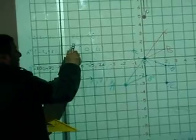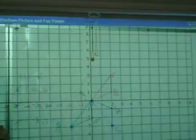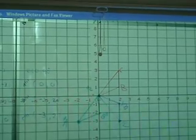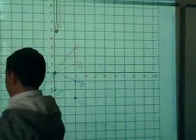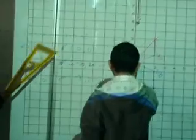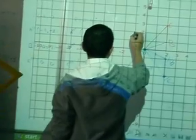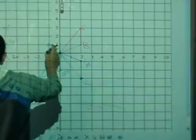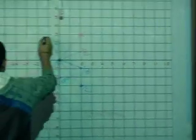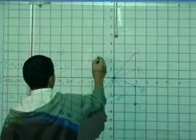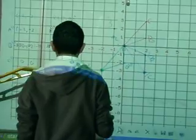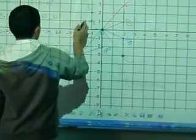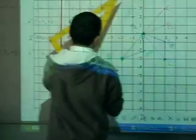Now I want to find the image of this triangle after rotation O 90 degrees. Come to the board and make the rotation. We will join between these points to form our triangle.